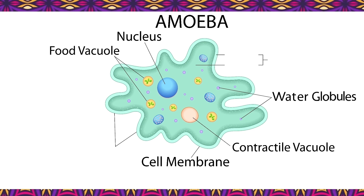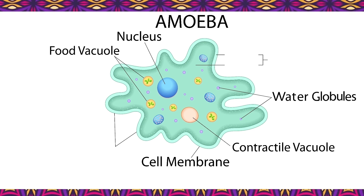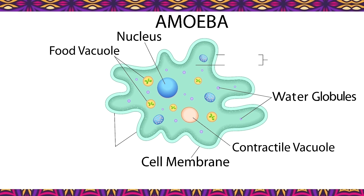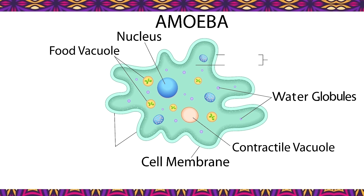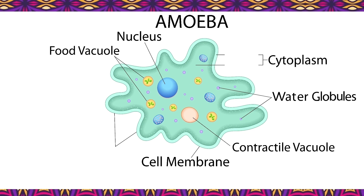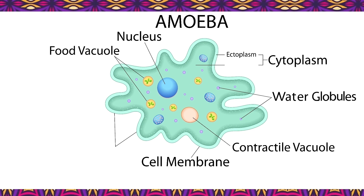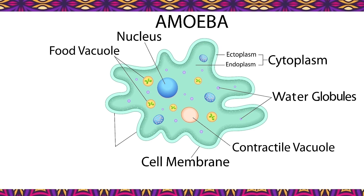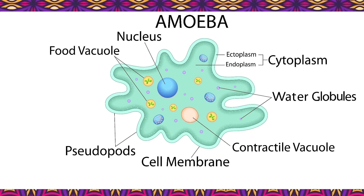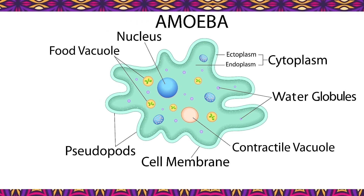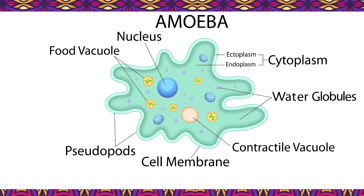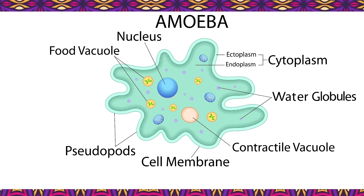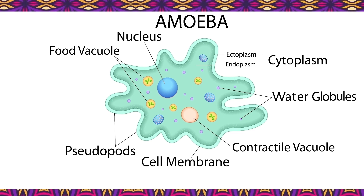Water globules: these are small, colorless, non-contractile spherical structures filled with water. Cytoplasm: this is a gel-like material that contains all the organelles of the amoeba. Pseudopods: these are finger-like projections that help the amoeba move about and grab hold of food particles.